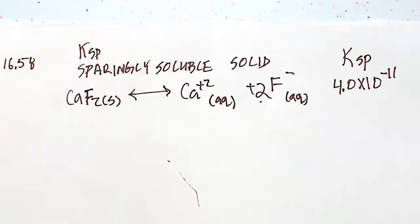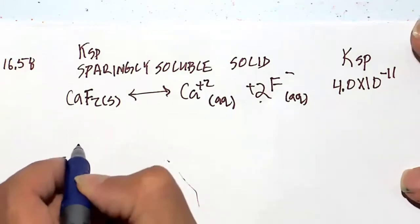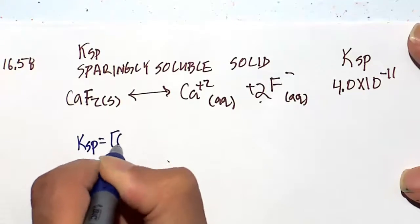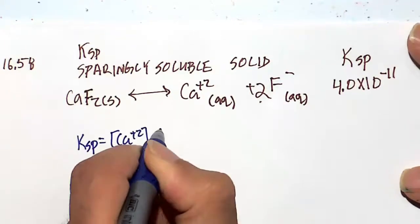By the way, the 4.0 times 10 to the minus 11 tells us the reaction is predominantly to the left. Very little of it is going to go to calcium ion and the fluoride ion. But enough to really calculate a solubility. We would expect the solubility to be small. Majority of this reaction is to the left-hand side towards the solid side.